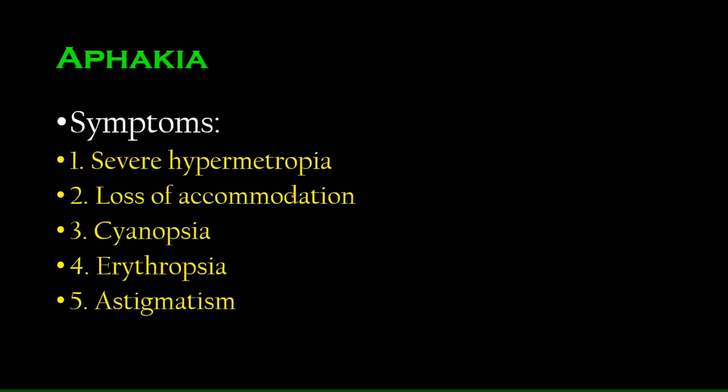The symptoms of aphakia are easy: severe hypermetropia, which is farsightedness — you cannot see near objects. Remember from previous lectures that the lens has accommodation: the more you bring an object near, the rounder the lens gets, helping us see near objects. With no lens at all, you cannot bend the light enough, so you cannot see near objects — hence severe hypermetropia.